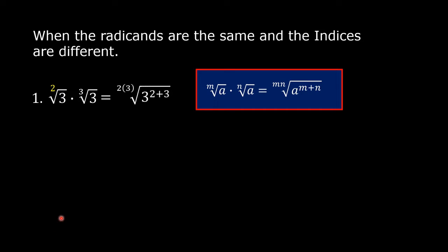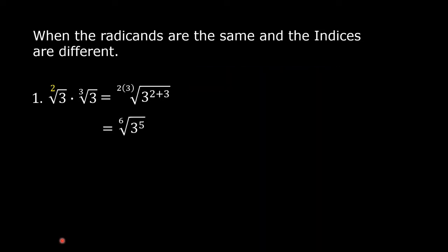So we have 2 times 3, and then 3 raised to 2 plus 3. This equals the 6th root of 3 raised to the 5th. Then 3 multiplied by itself 5 times — 3×3×3×3×3 — equals 243. So the answer is the 6th root of 243.